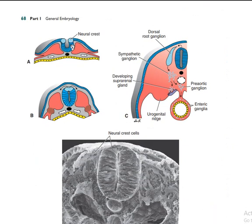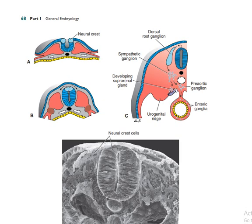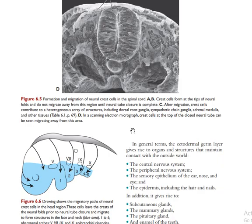Once the villi are formed, the yolk sac reduces its function and is mainly involved in forming the immune system. In cross-section, the neural folds at the upper part and yolk sac at the lower part are visible. The neural folds bind together to form the neural tube, with neural crest cells forming the dorsal ganglion, suprarenal gland medulla, paravertebral ganglia, and enteric ganglia of the gastrointestinal tract.